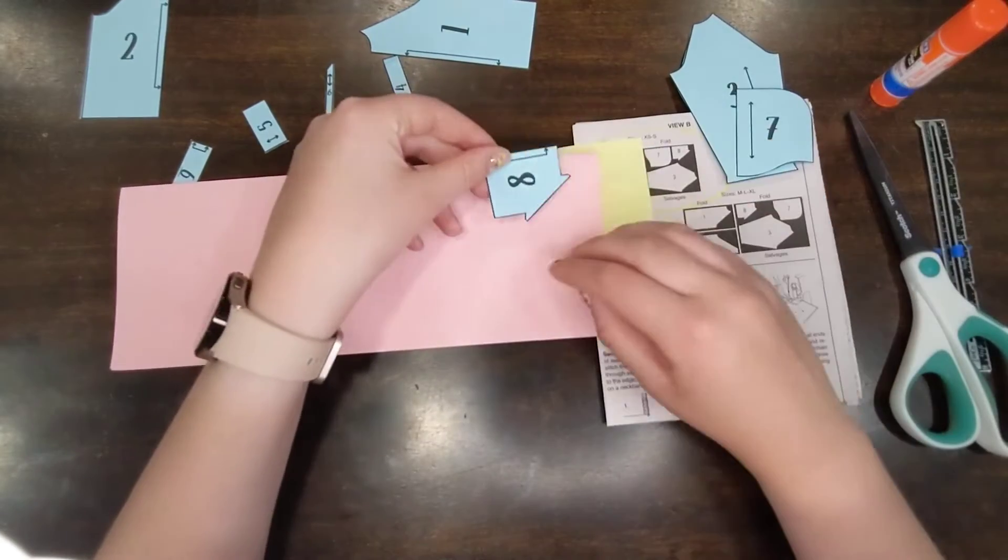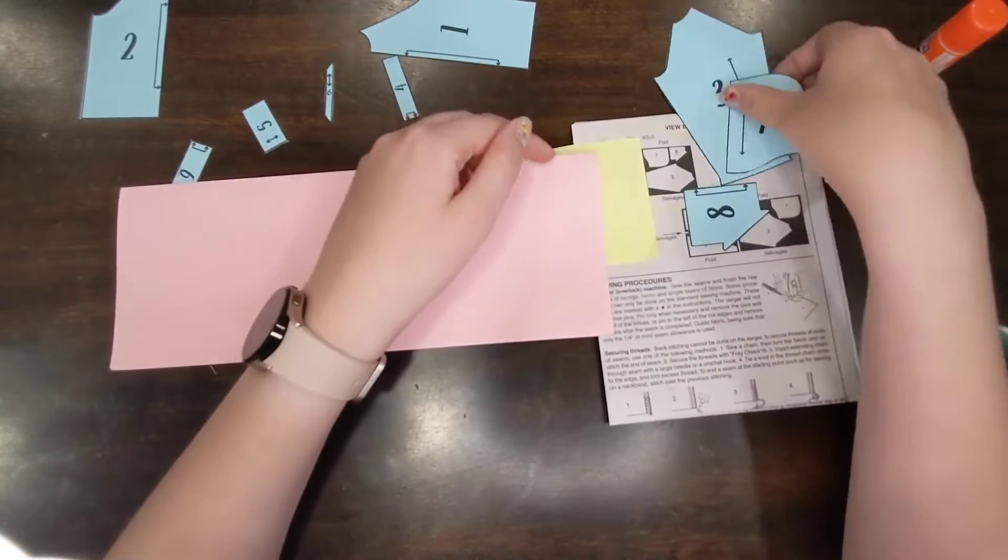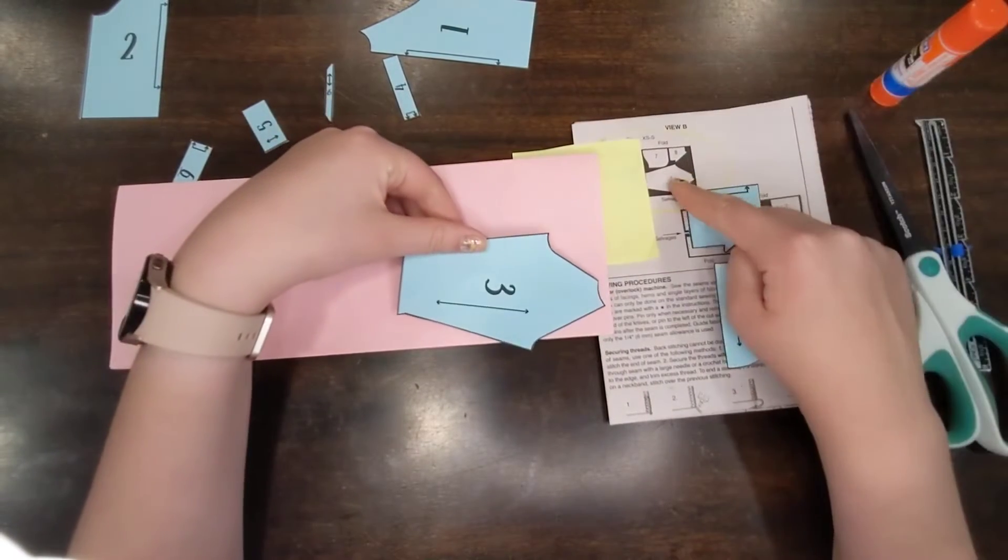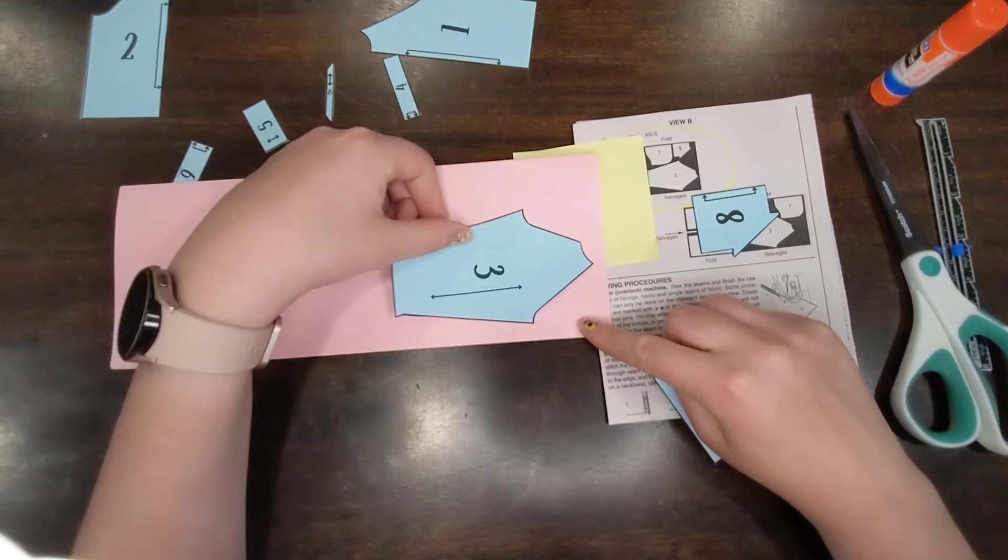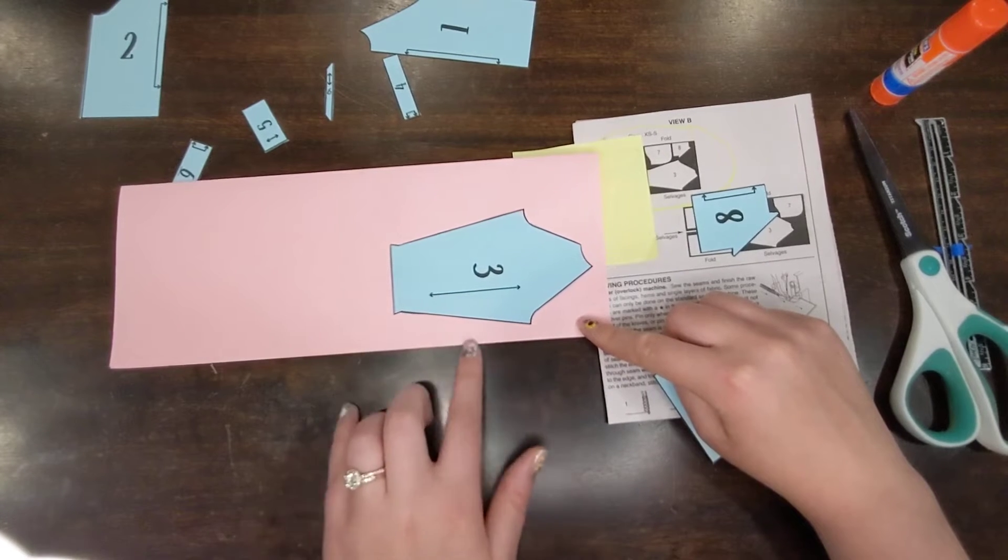Piece eight needs to be cut on the fold. So when I lay that one out, I'm going to have to place that right on the fold. These other two just have straight-up grain arrows. They do not need to be placed on the fold. I am going to copy this layout. So I'll start with piece three because that's the biggest. And I would lay it kind of like this. Keep in mind that this arrow needs to be parallel to my selvedge and my fold.